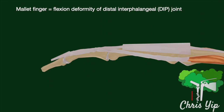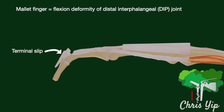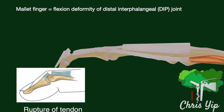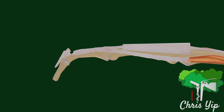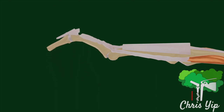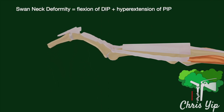A mallet finger is a flexion deformity of the distal interphalangeal joint, resulting from the loss of extension provided by the terminal slip. It can be due to a rupture of the tendon or an avulsion of the base of the distal phalanges. With the loss of the terminal slip, the force of extension will then be focused onto the central slip, leading to hyperextension of the proximal interphalangeal joint, which results in a swan neck deformity.